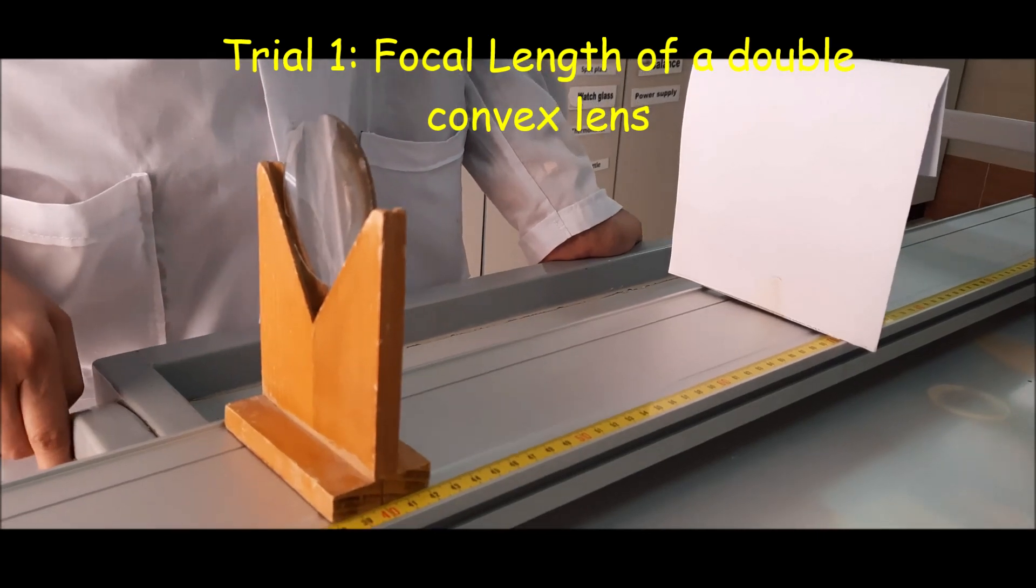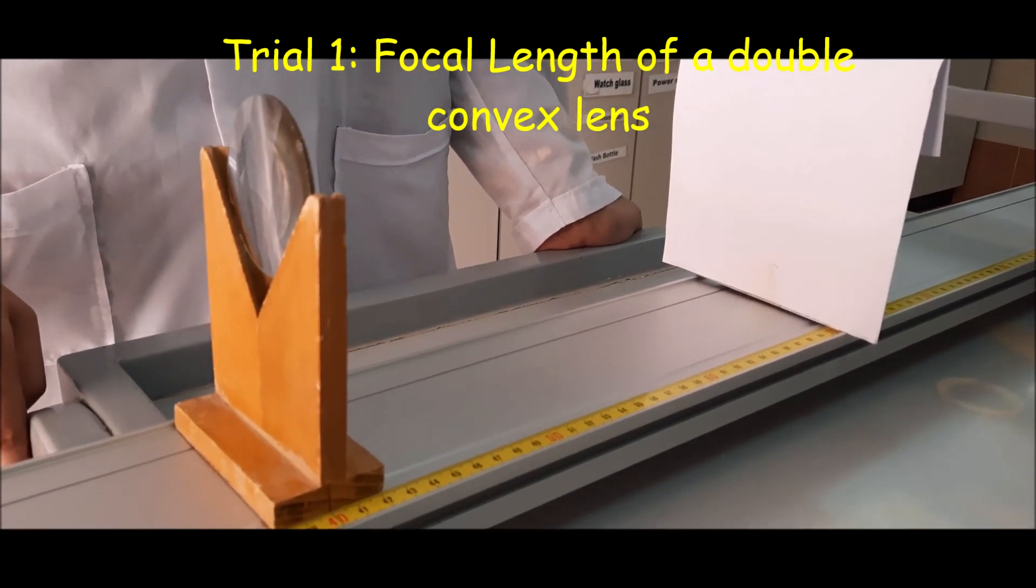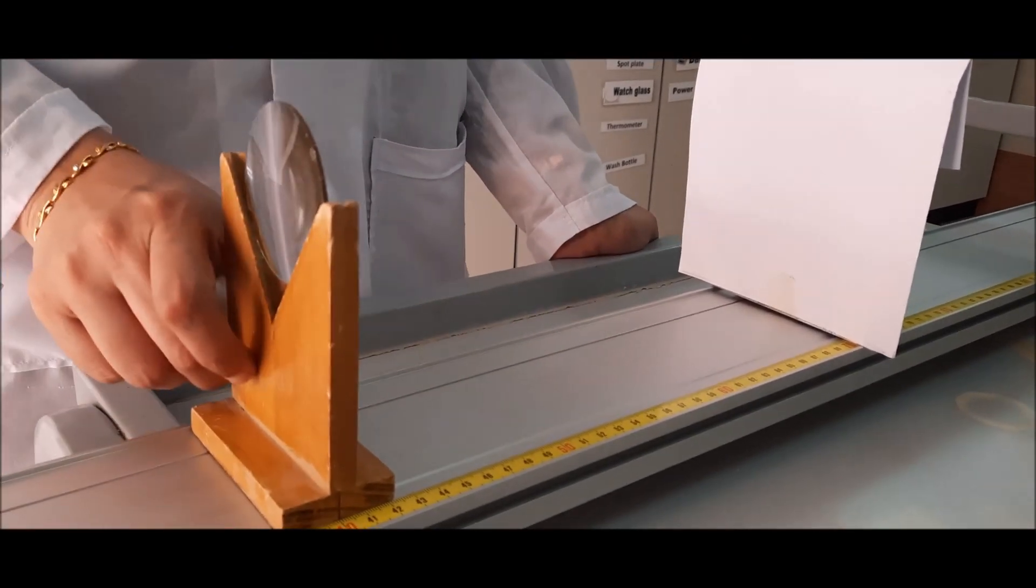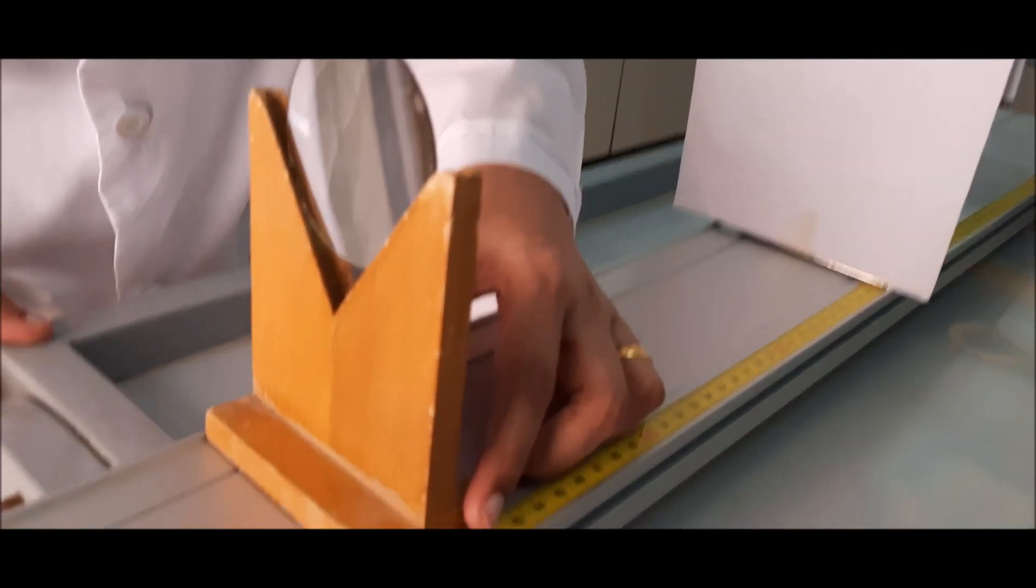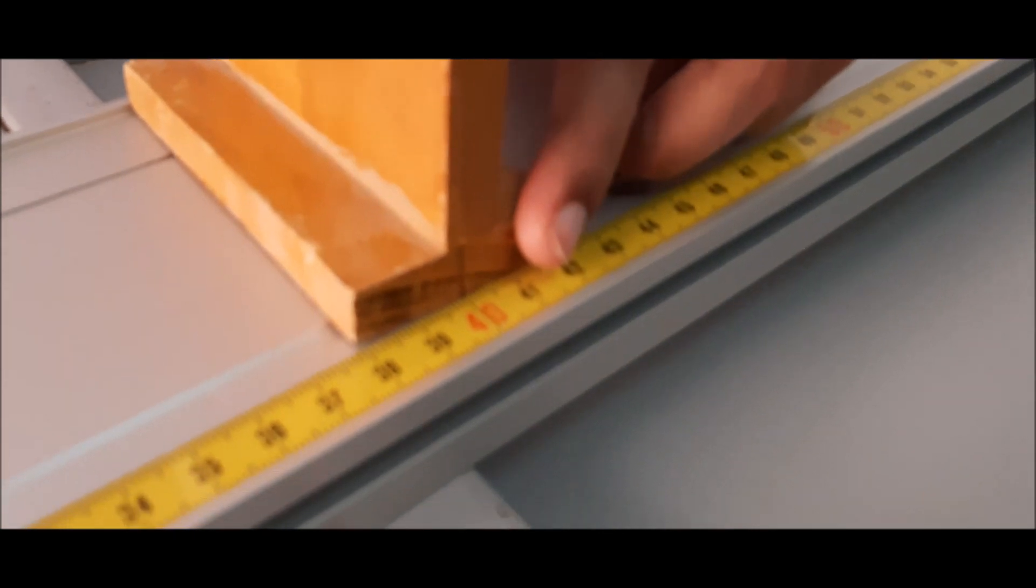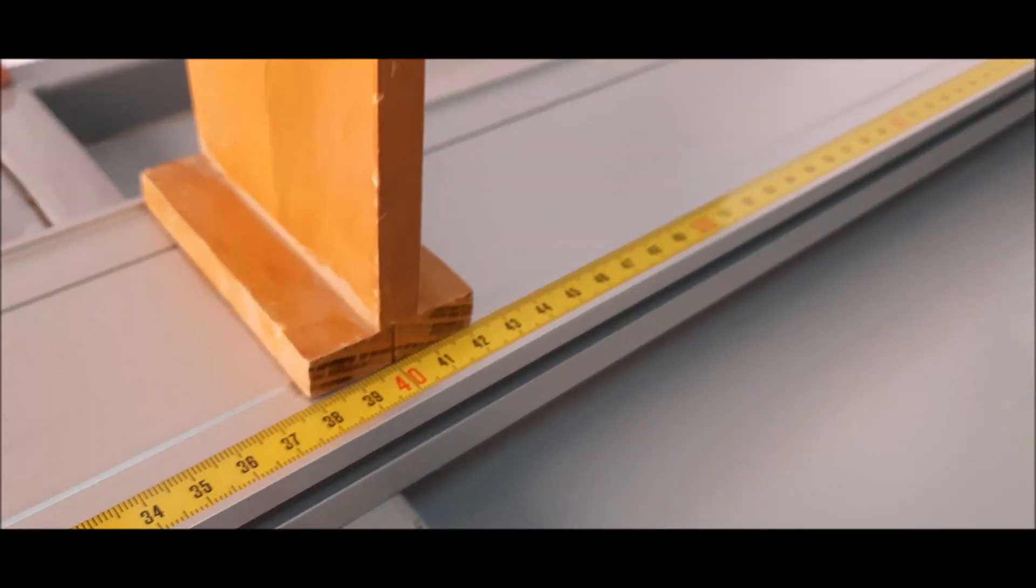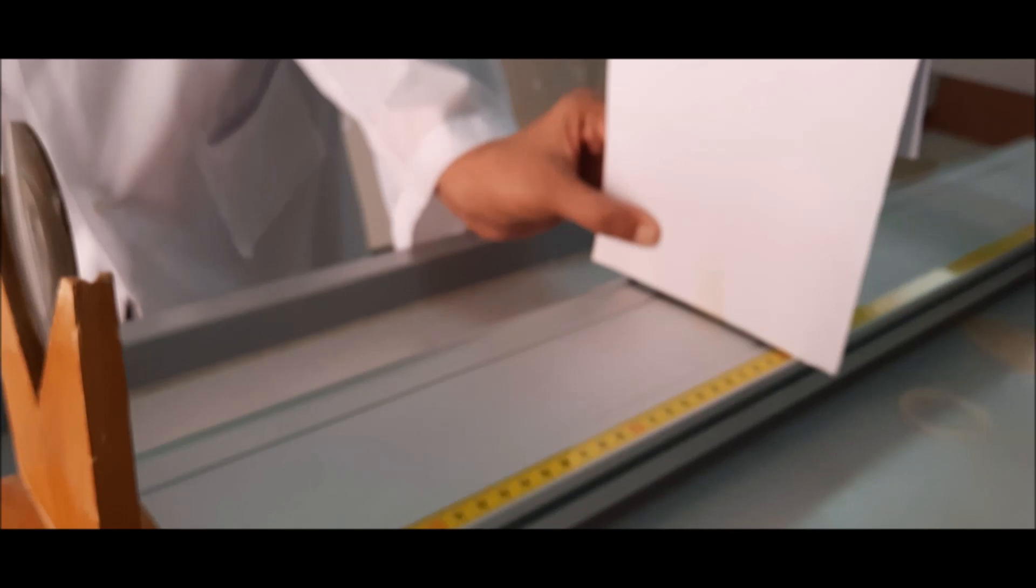Today, we are going to find the focal length of the double convex lens. For that, I will put this lens at 40 cm mark and this is my screen.